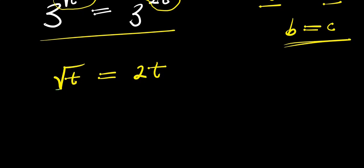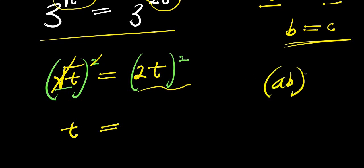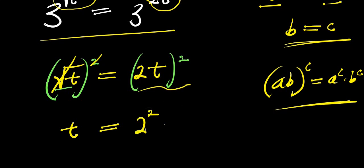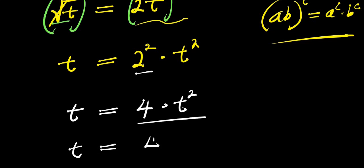We have this radical here, so to eliminate the square root we take the squares of both parts of this equation. The square root eliminates the square, so I have t. And this equals — applying the identity (a times b) to the power of c equals a to the power of c times b to the power of c — I'm going to have 2 to the power of 2 times t to the power of 2. So t equals 2 squared times t squared, which is 4t squared.